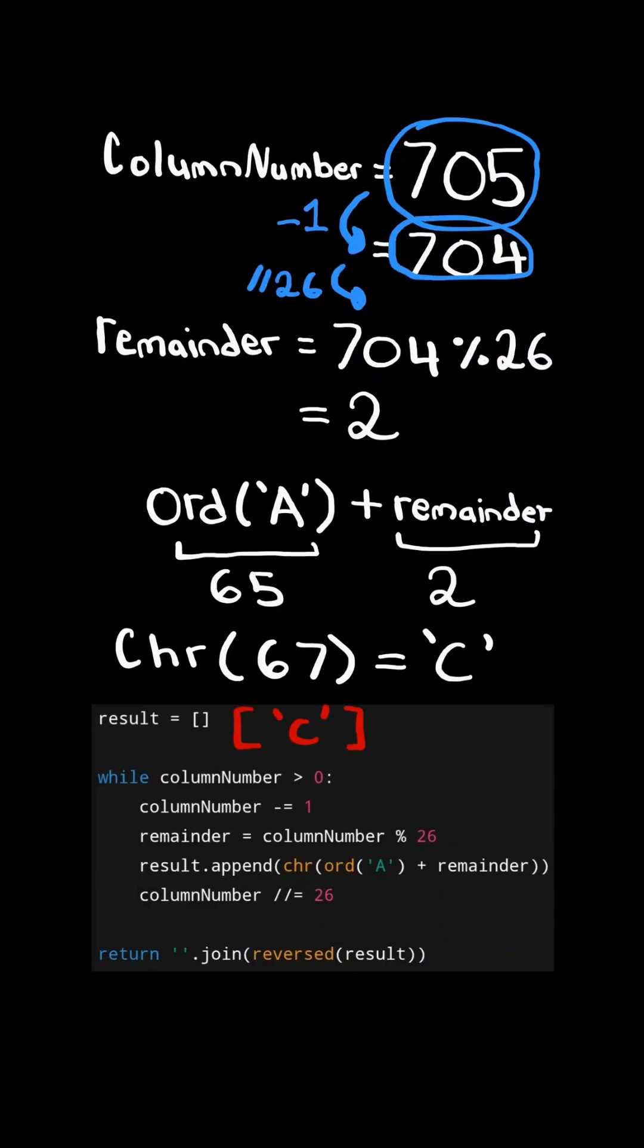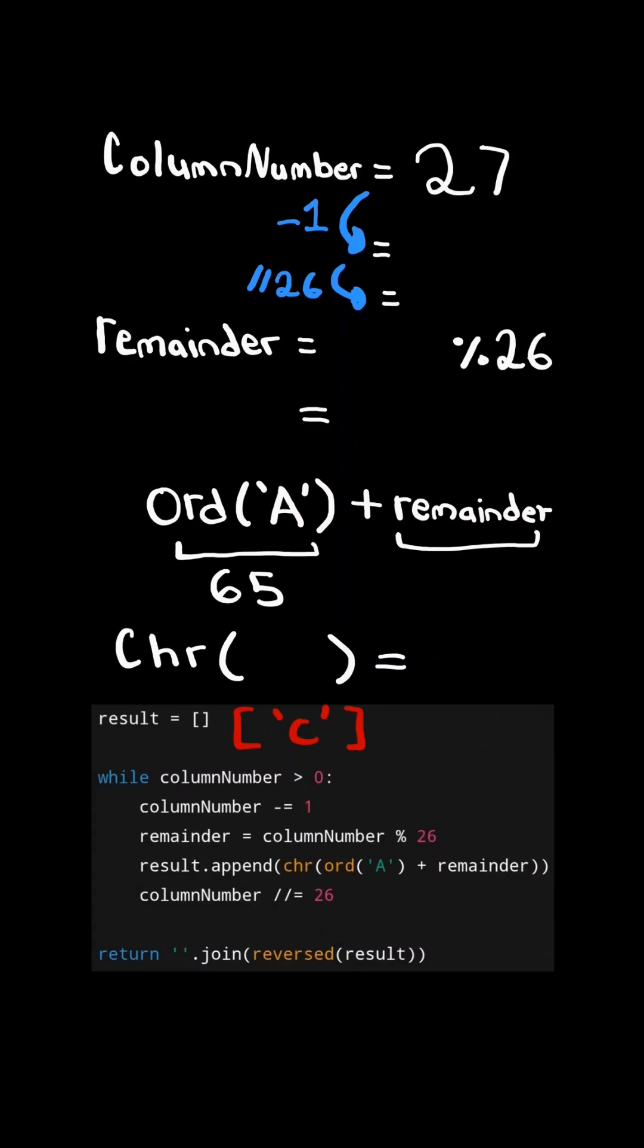Finally, we take the column number and integer division it by 26, and this results in 27. And we continue this algorithm while the column number is greater than zero.